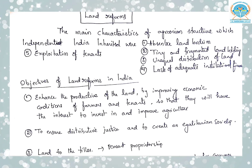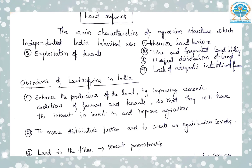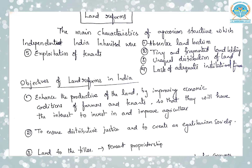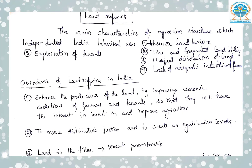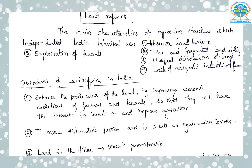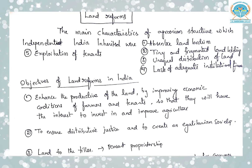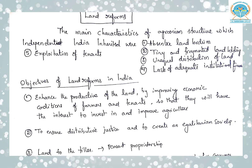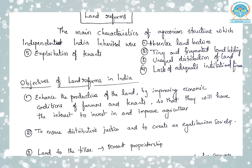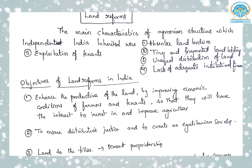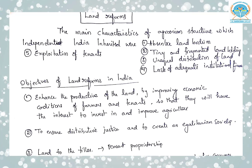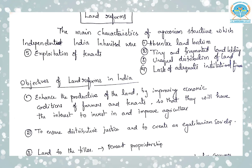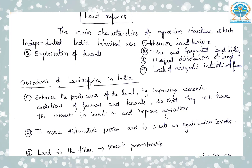It is a part of your GS Paper 3, Economics. The government of India is aware that agricultural development in India could be achieved only through reform of India's rural institutional structure. The first five year plan stated that land reform is a fundamental issue of national importance. The former Prime Minister Indira Gandhi emphasized that land reforms is the most crucial test which our political system must pass in order to survive.